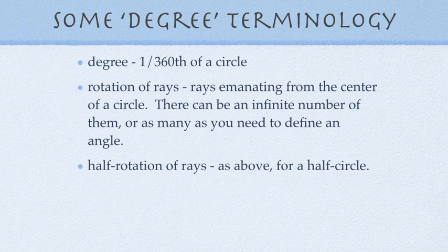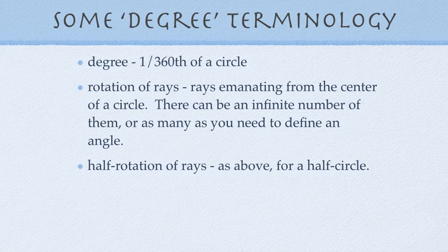Before we apply this to circles, let's talk a little bit about some degree terminology. A degree is 1/360th of a circle. And from a center of a circle, you can have rays emanating in all directions. There can be an infinite number of them, or there can be as many of them as you need to do your work, such as defining an angle.